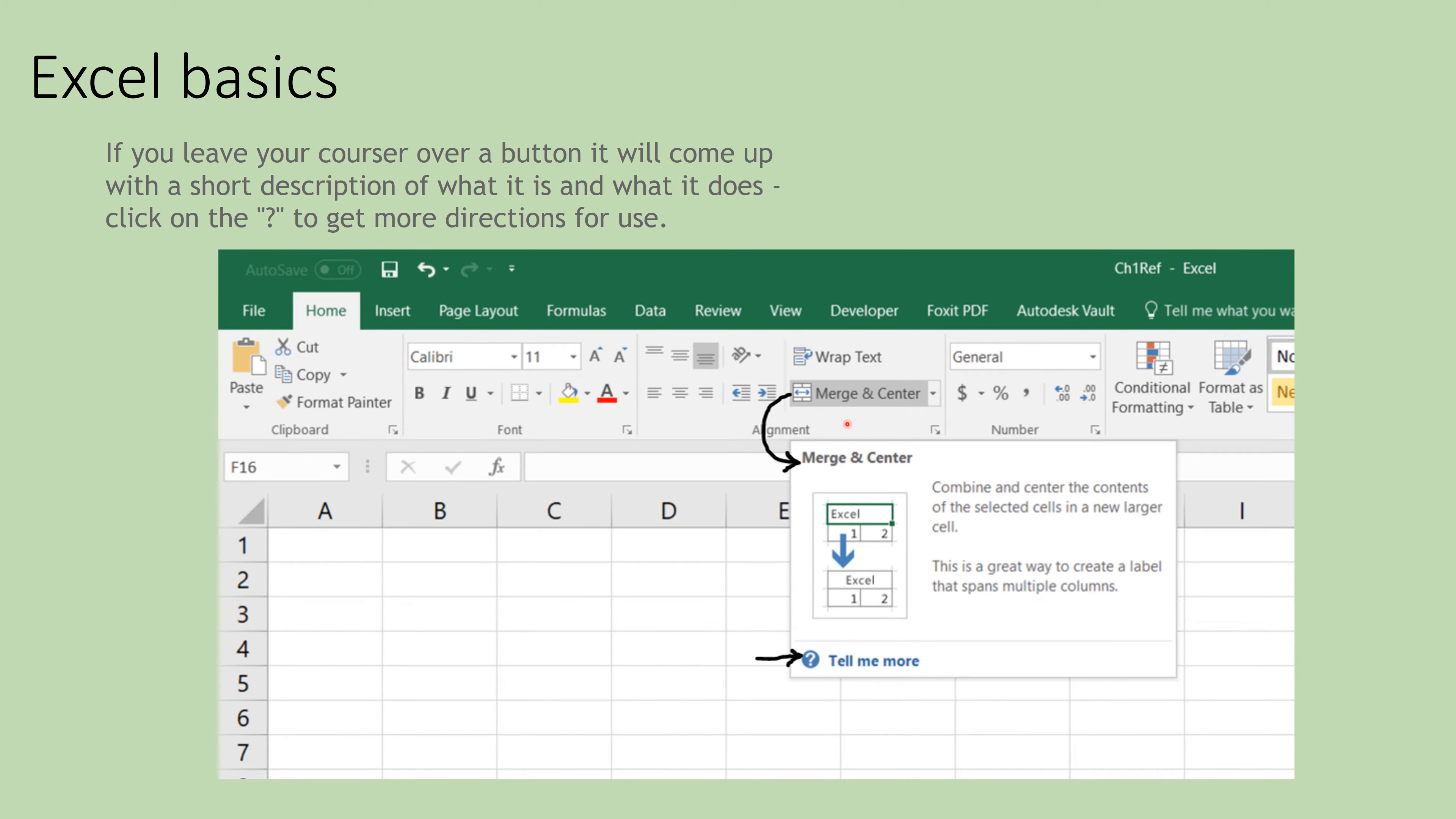Again, any of the buttons up here in the ribbon where all of your tools are, if you just take your mouse and hover your mouse, just be patient with it. Leave it over that button for a few seconds. It will pop up with a description of that tool and what that tool does. And then if this description is not enough for you, just go ahead and click on tell me more, and it will give you even more instructions for how to use every single little button up here in your tool tab.